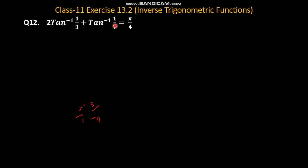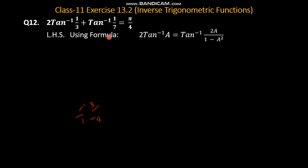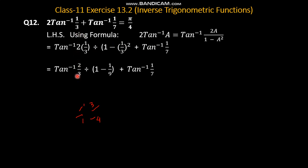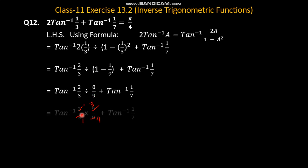Question number 12. 2a over 1 minus a square वाला formula लगाएंगे। A की जगा आजएगा 1 over 3, और tan inverse 1 over 7 को हम साथ साथ लेकर करते जाएंगे। तो 2 into 1 over 3 divided by 1 minus 1 over 3 का whole square, plus tan inverse 1 over 7. यह देखें: 2 multiplied by 1 over 3 तो tan inverse 2 over 3 आगया divided by 1 minus 1 over 9. अब 2 over 3 divided by 8 over 9 आजएगा।